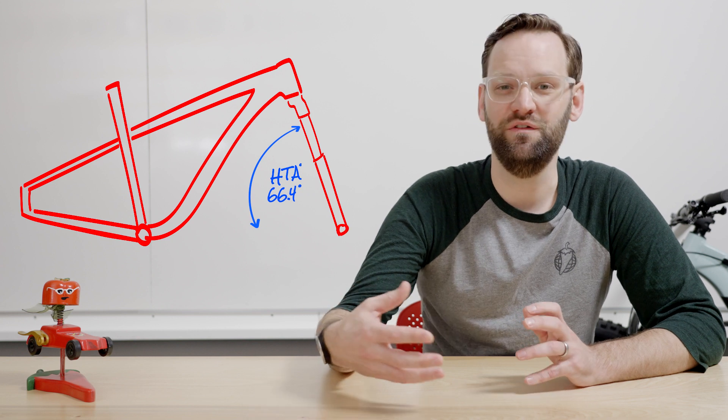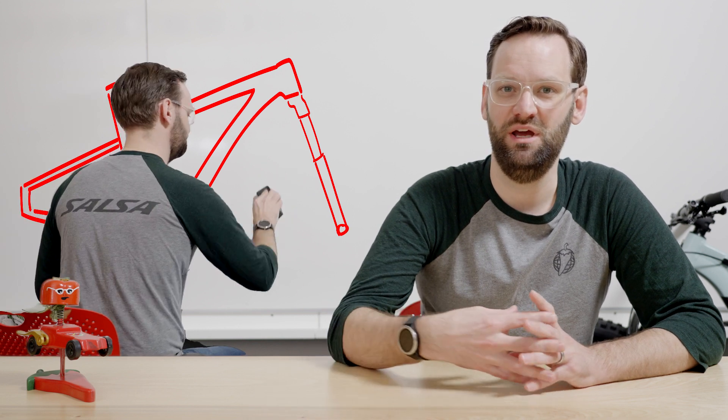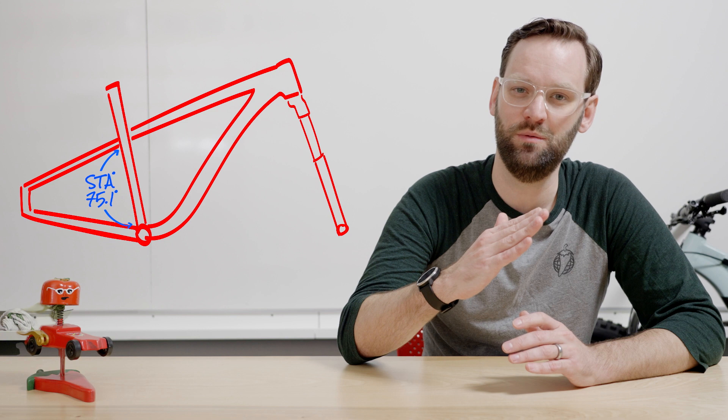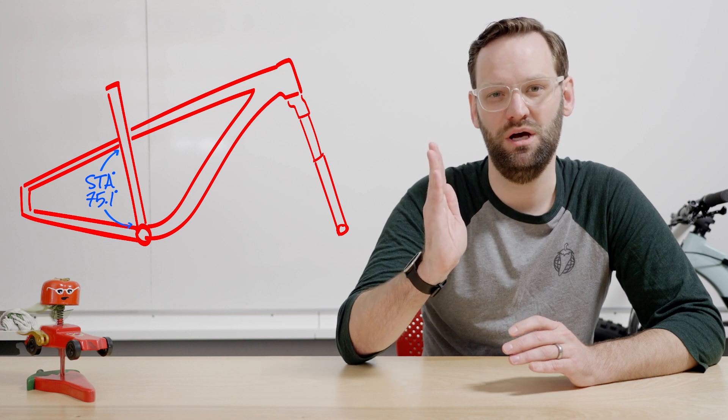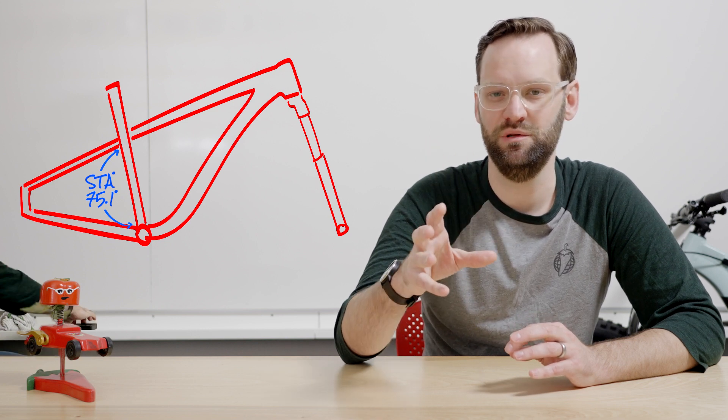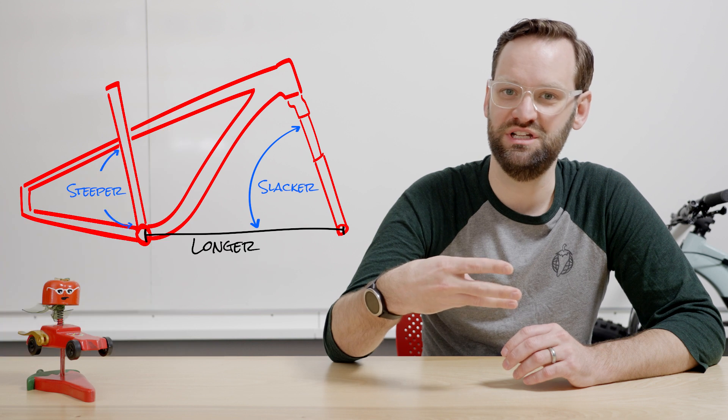And steeper, which means the seat tube angle comes steeper to put you more in a centered position over the bike. Now the three of those all work together.